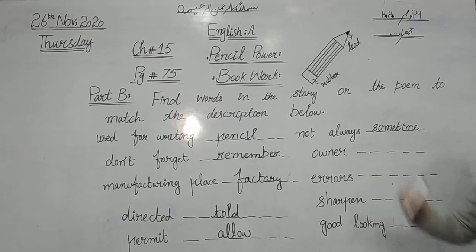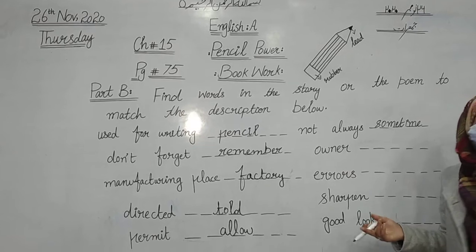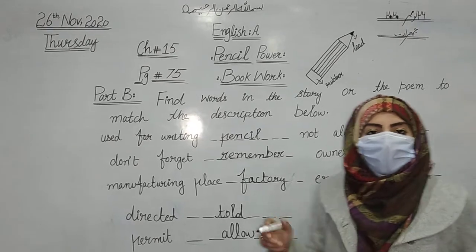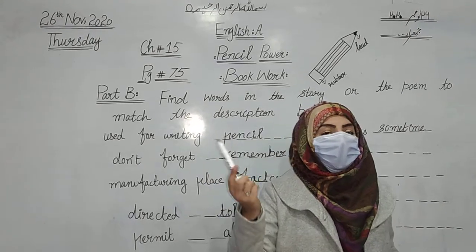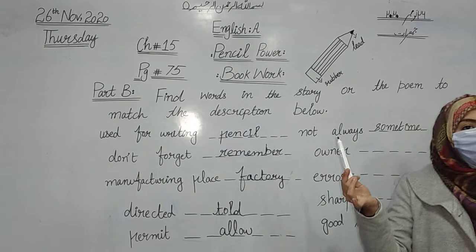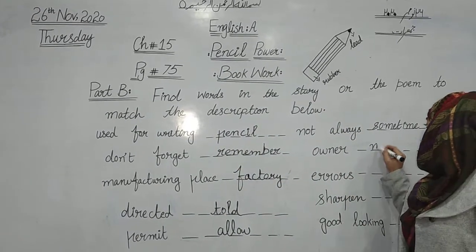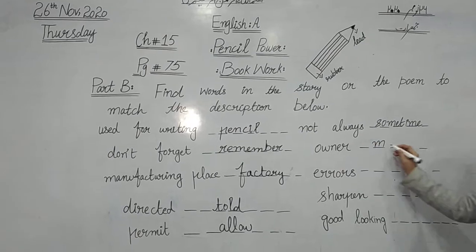Next is 'honor'. What is the meaning of honor? For example, I have a marker in my hand, so I am the owner of this marker. So it means 'master' — kisi cheez pe apni malkiyat show karna, to show ownership of something.